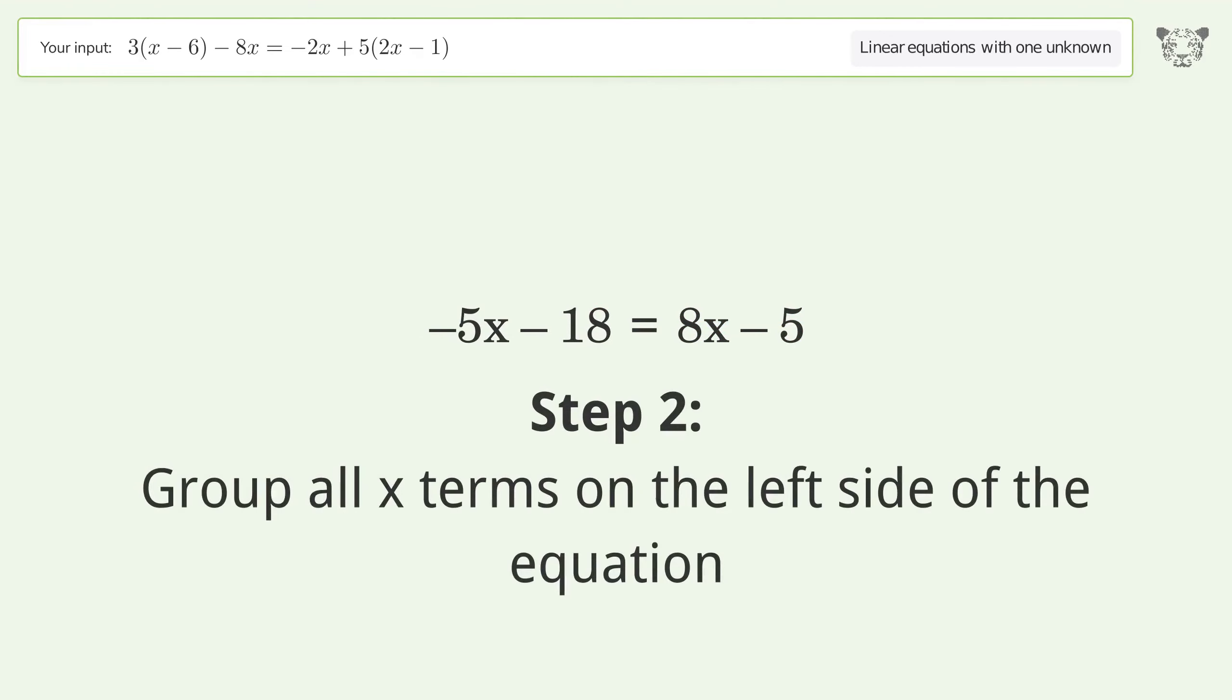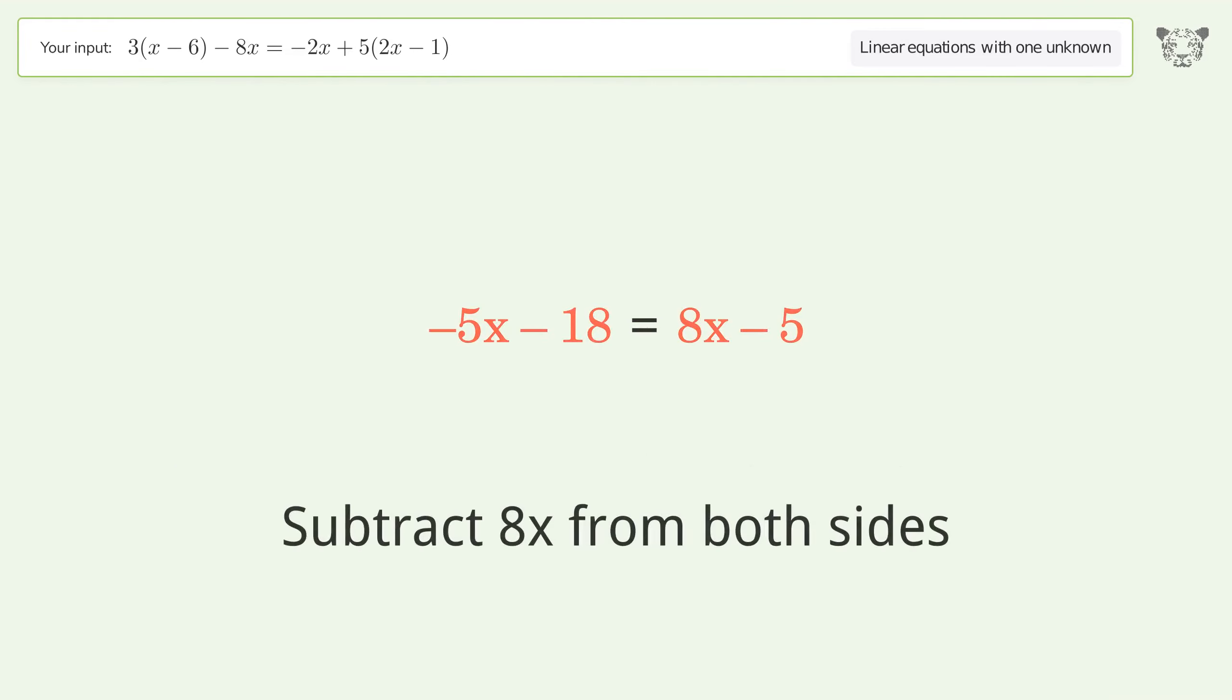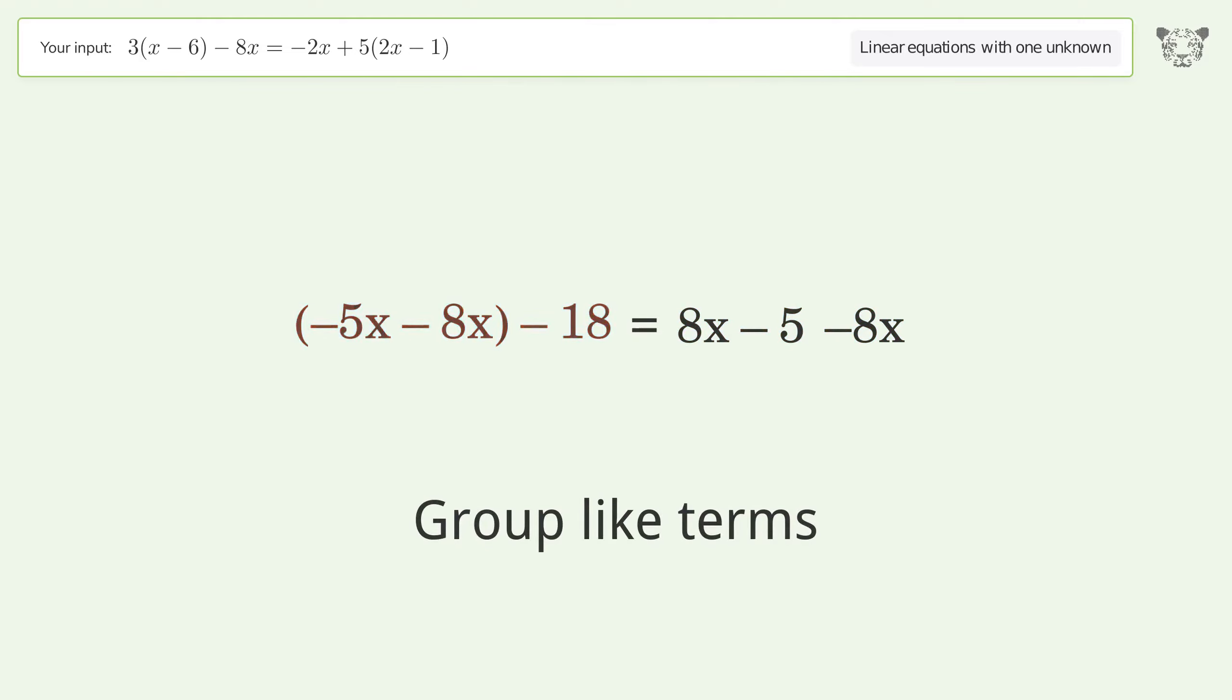Group all x terms on the left side of the equation. Subtract 8x from both sides. Group like terms. Simplify the arithmetic.